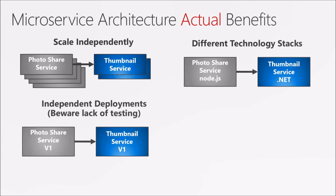The third reason is independent deployments — a lot of times what people think of as the holy grail of microservices. If the team responsible for the thumbnailing service has version one deployed and wants to make changes, they can bring it down and bring up version two while version one of the photo-share service just keeps running. This gives you agility, but there's also a downside: the team creating the thumbnail service can deploy a new version without ever testing it with the photo-share service, possibly breaking some behavior. So there's goodness and badness here.